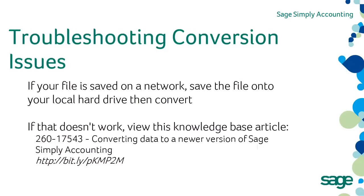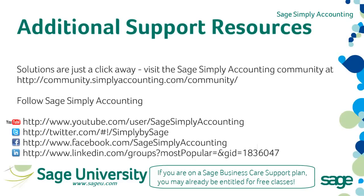If at any time you need assistance, please contact us at 1-888-522-2722 to speak to a support analyst. If you have any additional questions or need any additional help, solutions are just a click away. Visit our community page at community.simplyaccounting.com/community. You can also find us on Twitter at Simply by Sage and Facebook Sage Simply Accounting.